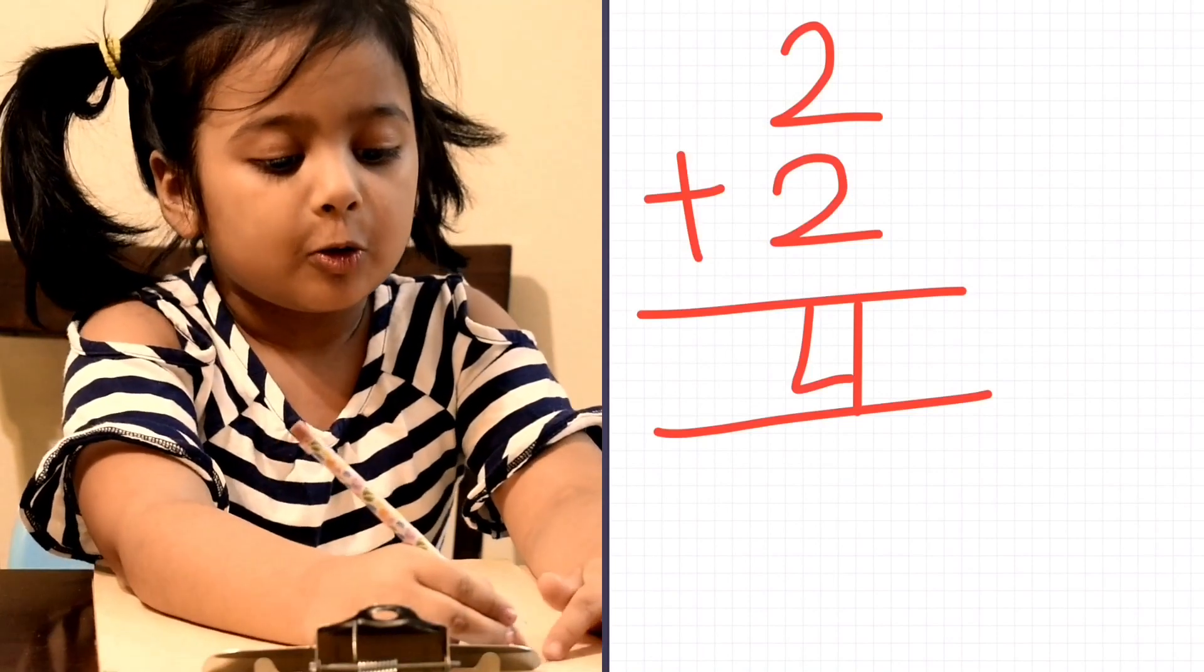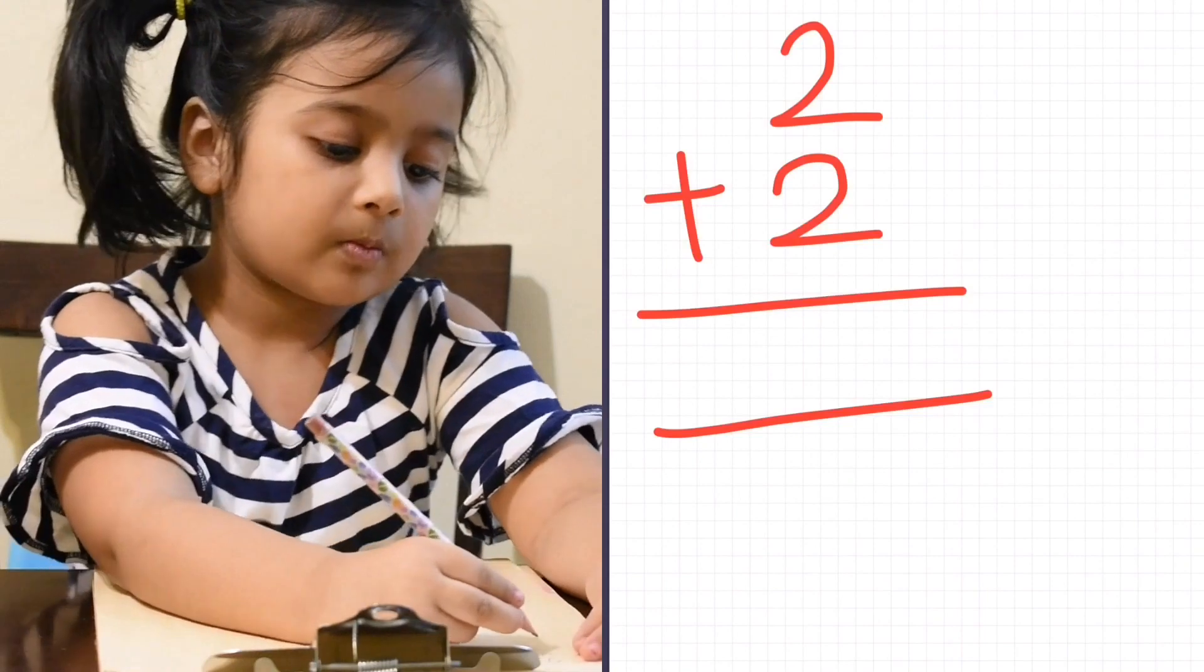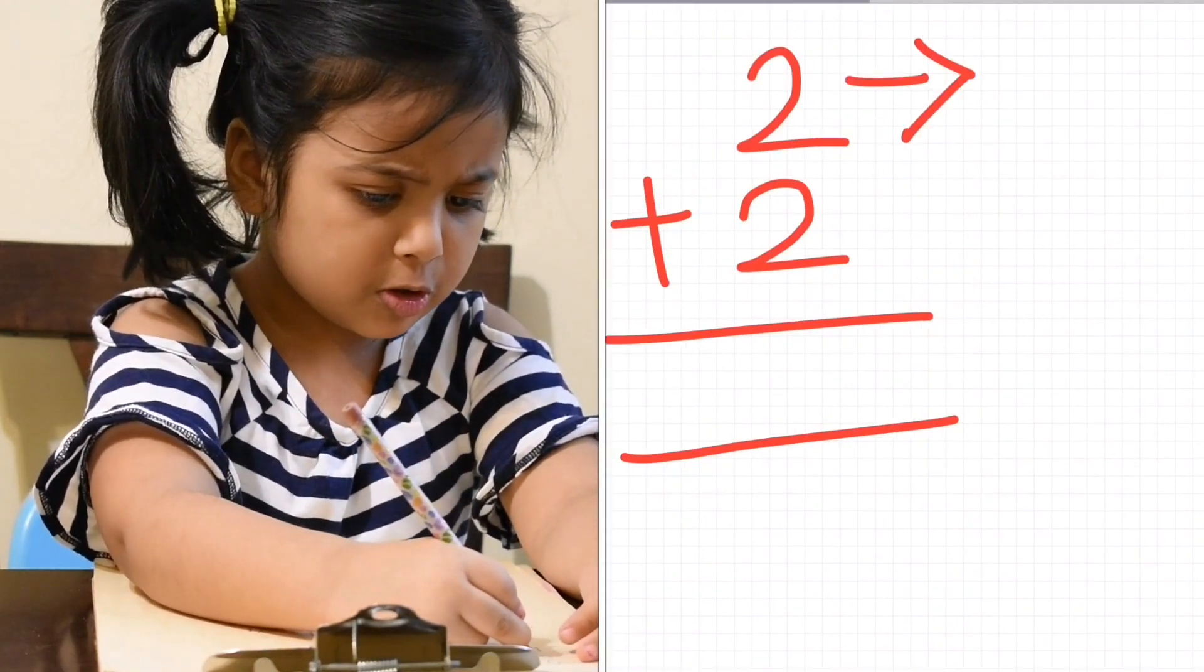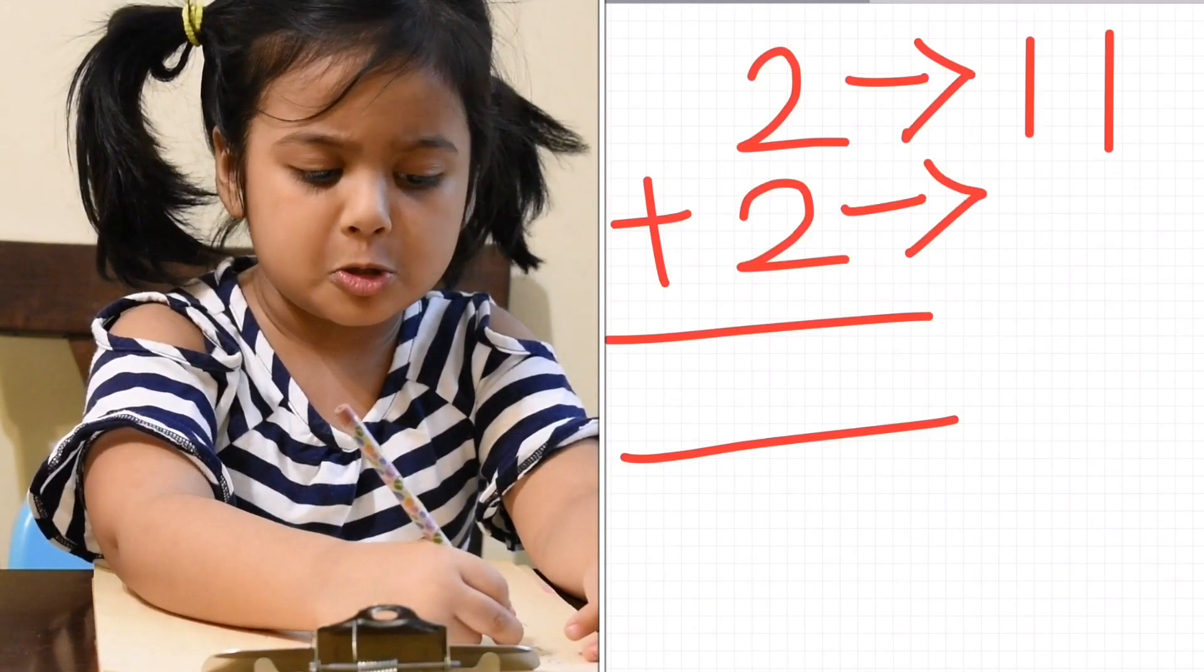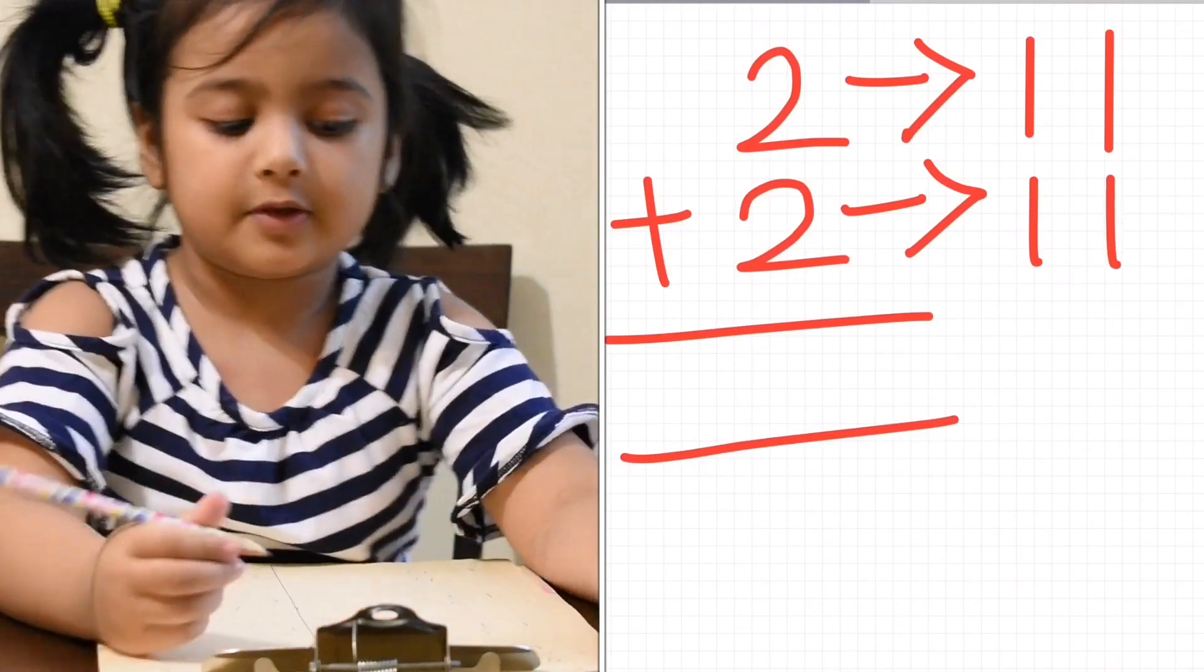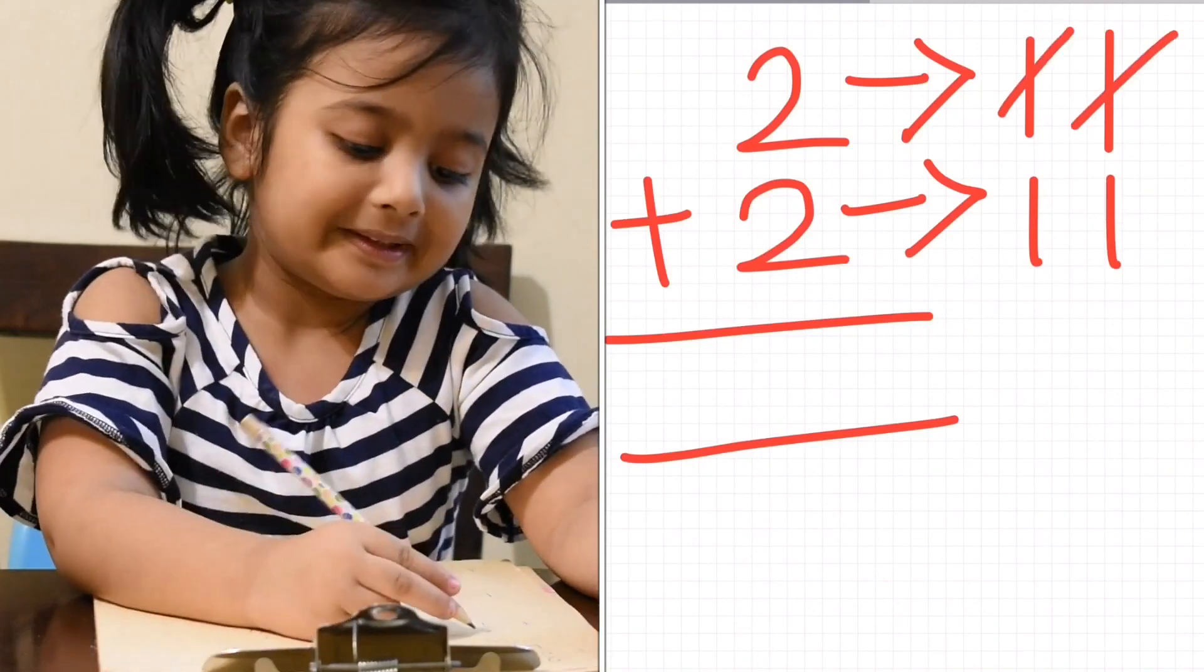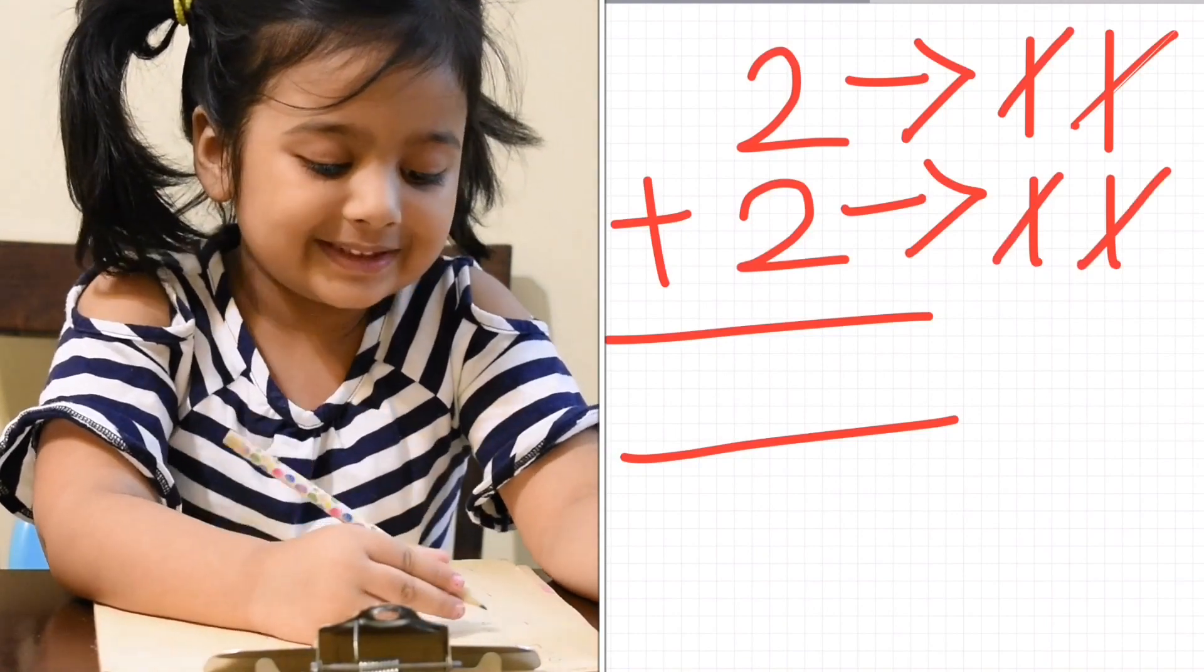Let's see how 2 plus 2 equals to 4! For these 2, draw 2 sticks! For these 2, draw another 2 sticks! Now count all the sticks! 1, 2, 3, 4! So 2 plus 2 equals to 4!